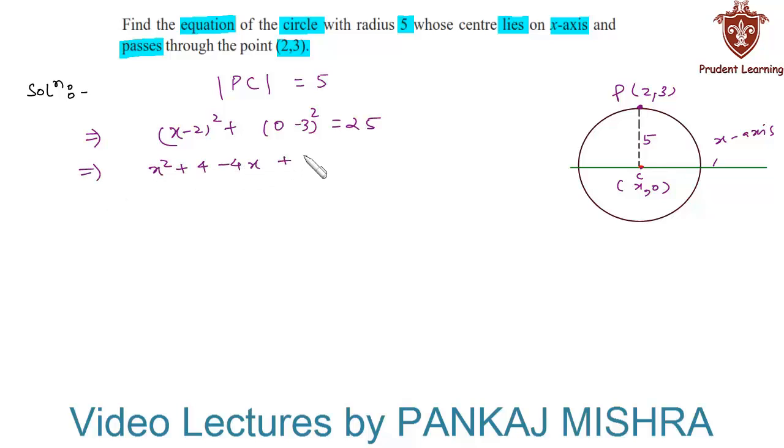This is equal to x² - 4x + 9 + 4 is 13, and bringing this 25 on the left-hand side will make it -25 = 0. x² - 4x + 13 - 25 is -12 = 0.